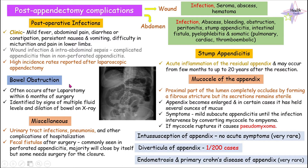Let's move on to the next type, which is bowel obstruction, also known as intestinal obstruction. Usually this bowel obstruction occurs after laparotomy and it will occur within six months of the surgery. To identify the presence of a bowel obstruction, we can do an X-ray and we can see signs of multiple fluid levels.